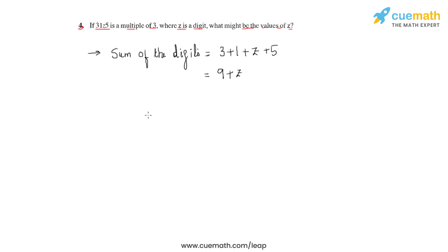Now for that to happen, let us first consider the first value of z. If we assign z to be 0, this will result in the sum to be 9 plus 0 equals 9. Hence this sum is divisible by 3, so definitely 0 is a valid value of z.